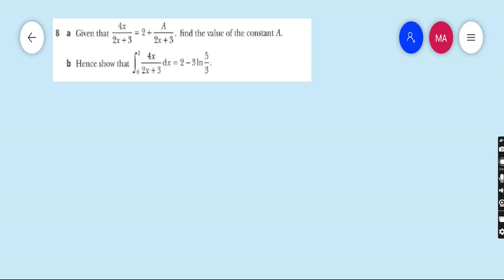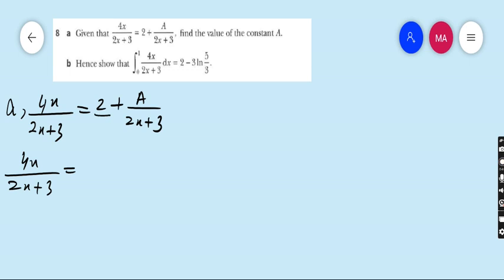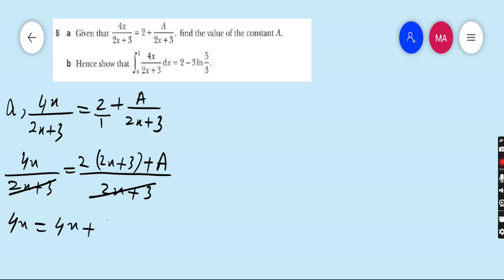Question number 8 part a. Given that 4x upon 2x plus 3 is equal to 2 plus A upon 2x plus 3, find the value of the constant A. Very easy. Taking LCM on the right side: 2 times (2x plus 3) plus A, all over 2x plus 3. This equals 4x plus 6 plus A, all over 2x plus 3. Comparing with left side: 4x equals 4x plus 6 plus A. So A equals minus 6. This is the answer of part a.